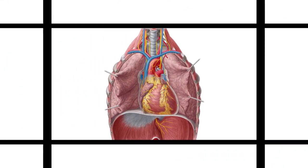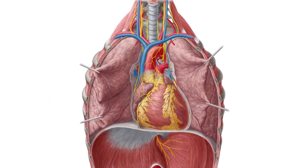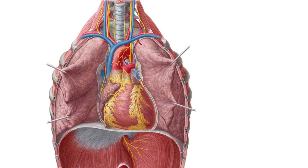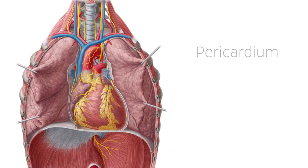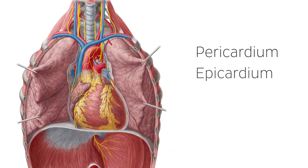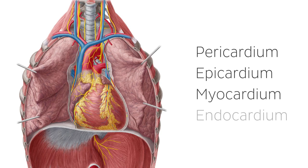The heart is a large muscular organ that is comprised of four different layers. From the outside to the inside, they are called the pericardium, the epicardium, the myocardium, and the endocardium. Each layer has a different function that primarily aids the pumping action of the heart, which allows the blood to flow around the body.